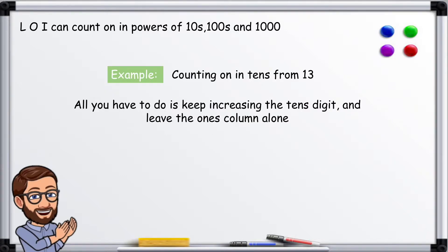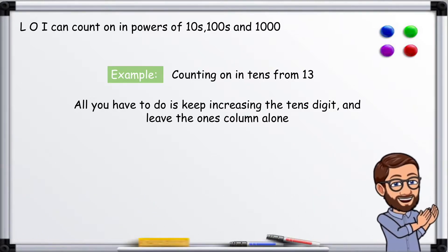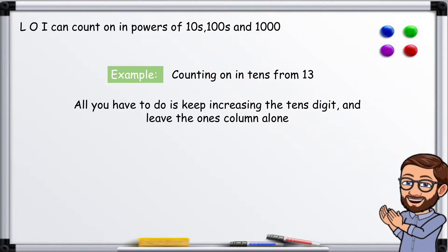Example: counting on in tens from 13. All you have to do is keep increasing the tens digit and leave the ones column alone.